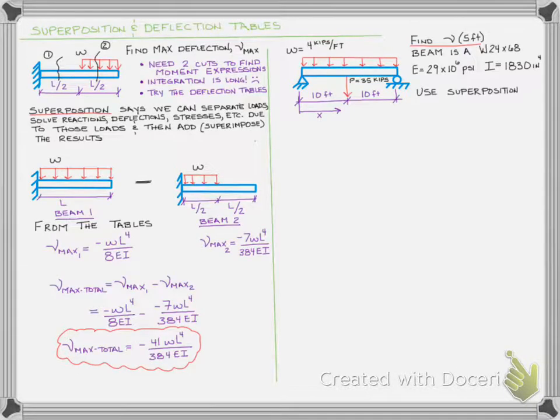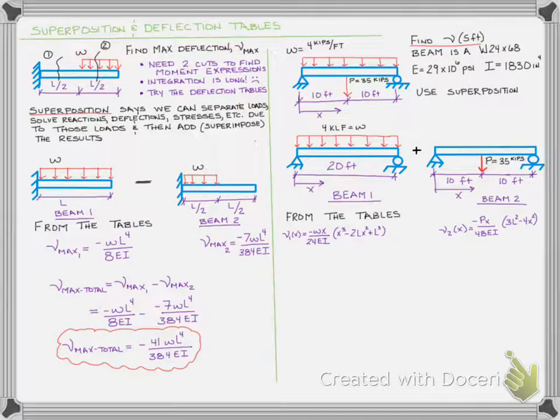Let's go back to our original problem. We want to use superposition and bring those two beams over. We have the distributed load of four kips per lineal foot acting along 20 feet. From the deflection tables, the equation of the elastic curve is negative WX over 24EI times the quantity X cubed minus 2LX squared plus L cubed. Then we add the simply supported beam with the point load in the middle of 35 kips. From our deflection tables, the equation of the elastic curve is negative PX over 48EI times 3L squared minus 4X squared.